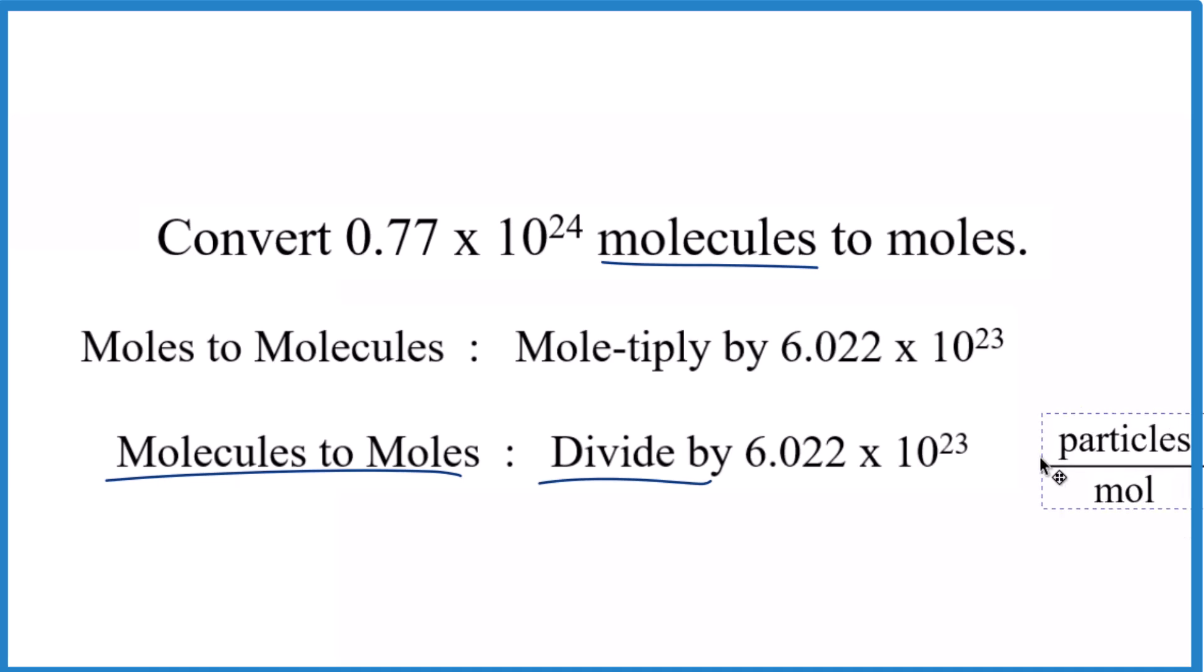And the units for Avogadro's number, that's the particles per mole. In this case, the particles we're talking about are molecules. But sometimes you'll have atoms or ions or something else. So molecules to moles, we divide the number here by Avogadro's number, and we're going to be left with moles. Let's do that.